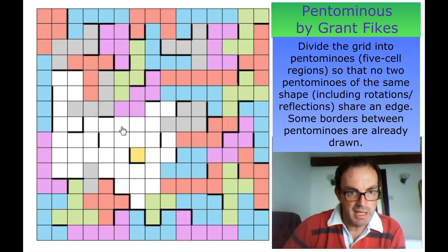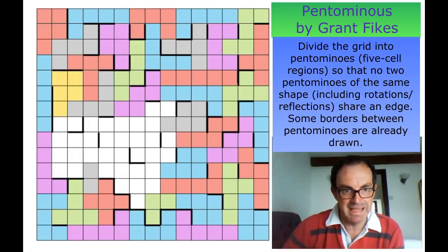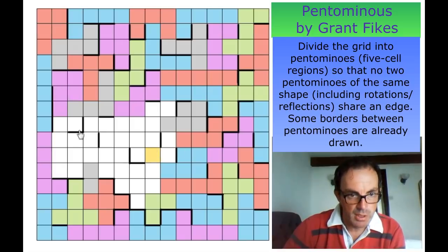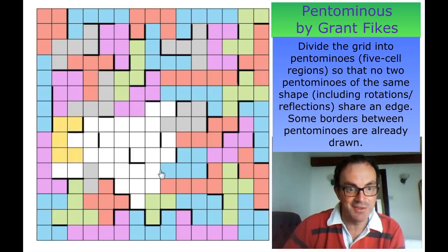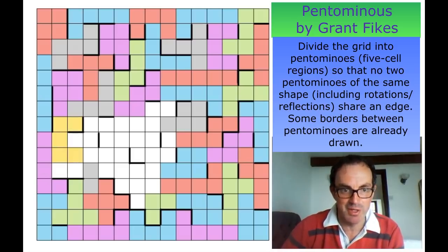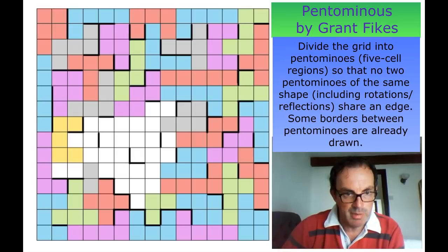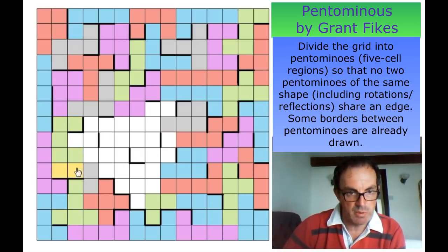We're doing well here. This must be a P by the logic we've discussed at length. This now must be — can't be an L because it would connect to this — so that's another U pentomino. We haven't had a U for a while. I'll make it green. These squares now have to join the other gray.